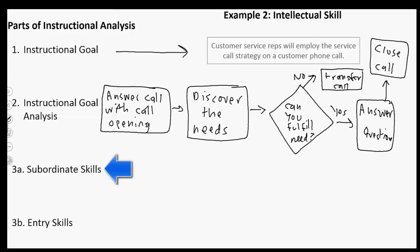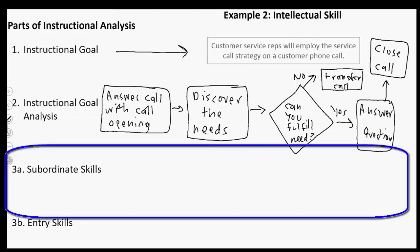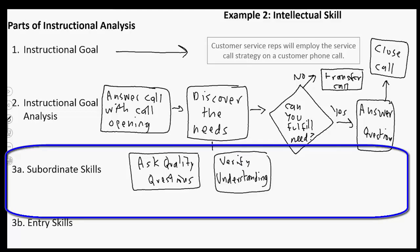Okay, so let's do a subordinate skills analysis for this instructional goal now. I'll just do a few of these. So let's talk about discovering the needs. What are some of the subordinate skills that are required for discovering a customer's needs? Well, one thing I'm going to say here is asking quality questions so you understand what their needs are. The next thing you could do then is also verify understanding. And you want to do that before you start to answer their questions so that you can make sure you're answering the right questions.